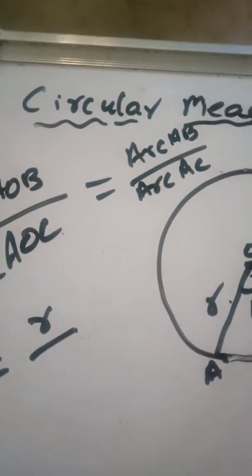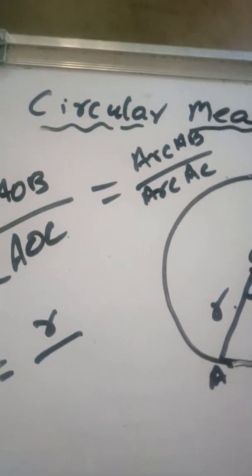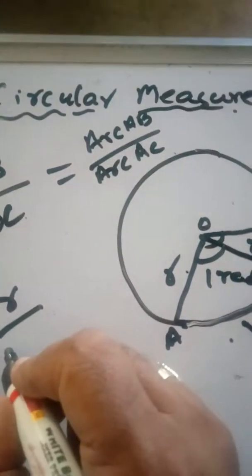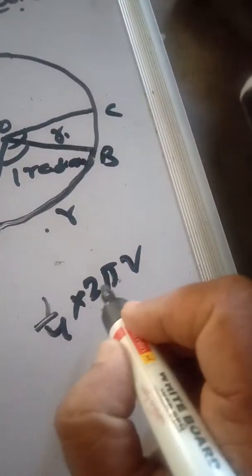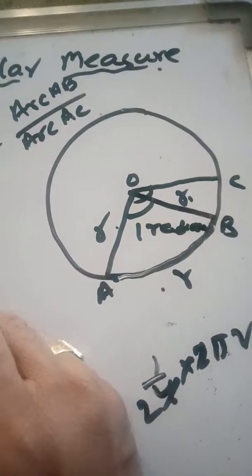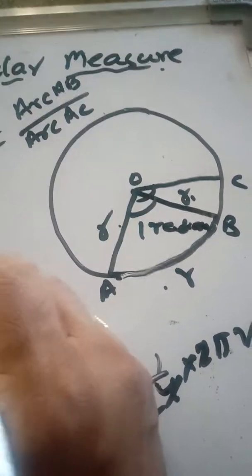So the total circle is 2πR. One-fourth of the circle means (1/4) × 2πR, which equals (1/2)πR. So I can write here (1/2)πR.